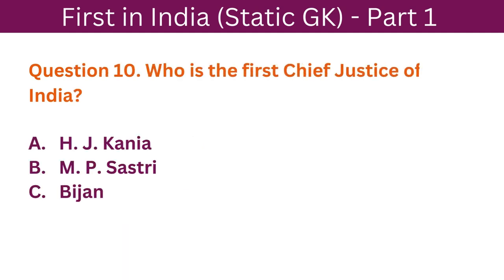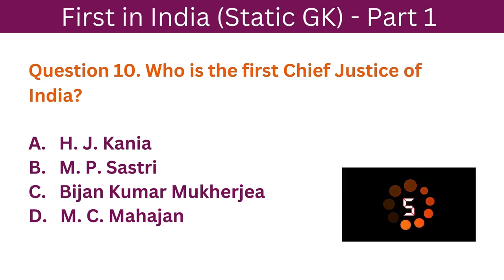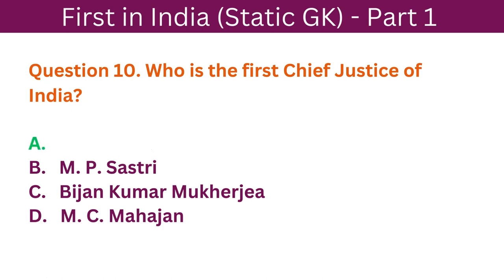Question 10: Who is the first Chief Justice of India? A. H.J. Kania. B. M.P. Sastri. C. Bijan Kumar Mukherjee. D. M.C. Mahajan. The correct answer is A. H.J. Kania.